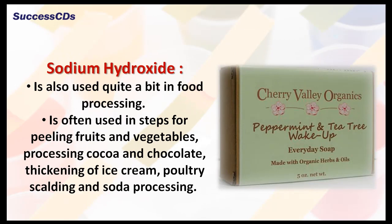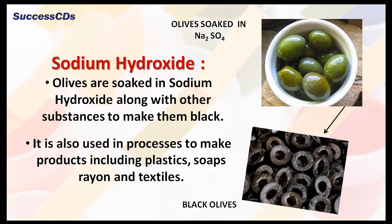Sodium hydroxide is used quite a bit in food processing. It is often used in steps for peeling fruits and vegetables, processing cocoa and chocolate, thickening of ice cream, poultry scalding and soda processing. Olives are soaked in sodium hydroxide along with other substances to make them black, as shown in the picture.